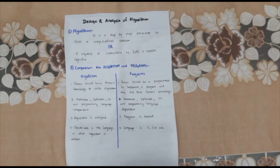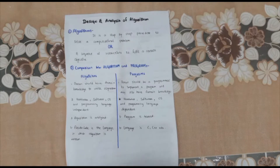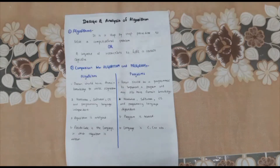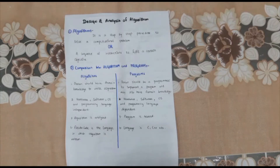Basically, designing means you start collecting ideas toward a final solution. Here, what we are designing is an algorithm, and the main objective of designing an algorithm is to solve a problem. Next is analysis — we will analyze our algorithm with respect to certain factors, such as how much time and space it takes. We will see those factors in detail.